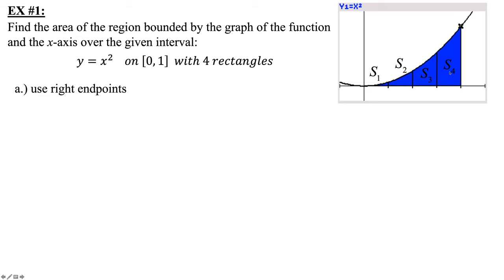If we're asked to use right endpoints, we have 0, one-fourth, two-fourths, three-fourths, four-fourths. That's our change in X. B minus A: 1 minus 0 divided by 4 is one-fourth. So all my rectangles are going to have a base of one-fourth.